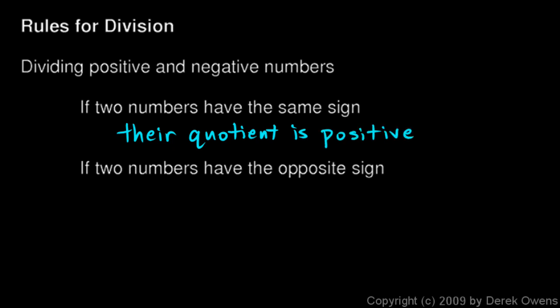If two numbers have the same sign, then their quotient is positive. In other words, if you divide a positive number by a positive number, the result is positive. And if you divide a negative number by a negative number, again the result is positive.